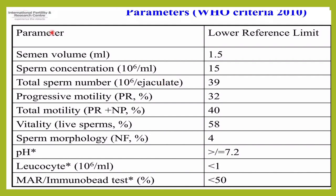As per the WHO criteria, the sperm concentration per ml should be at least 15 million per ml, and the total sperm number per ejaculate has to be at least 39 million.